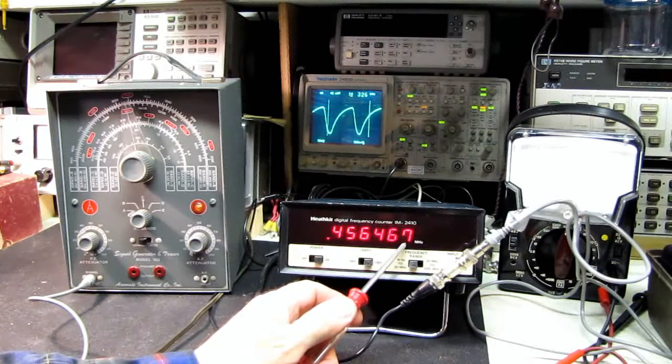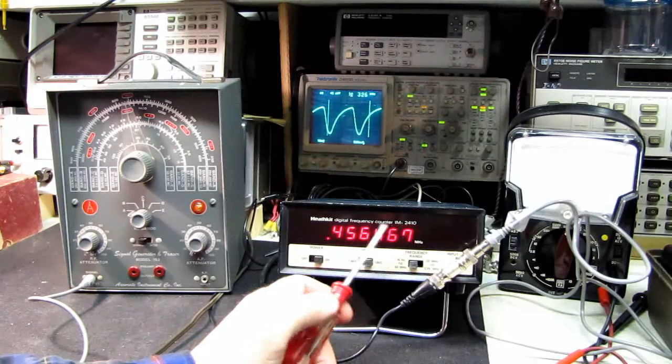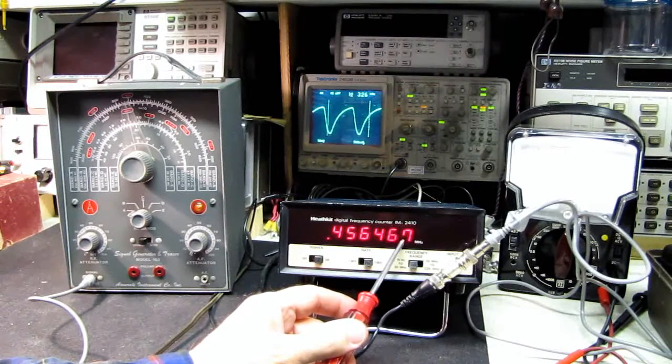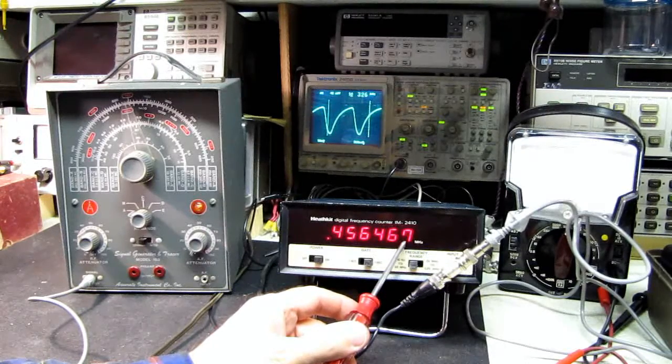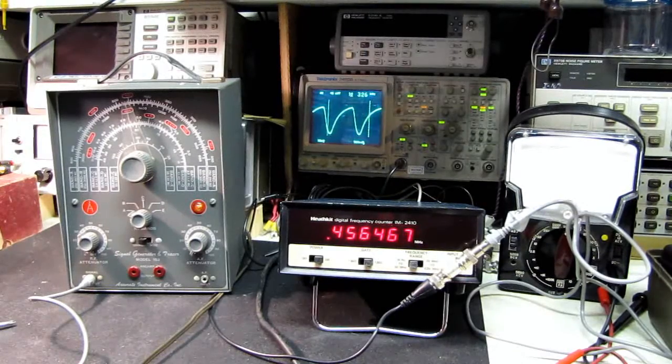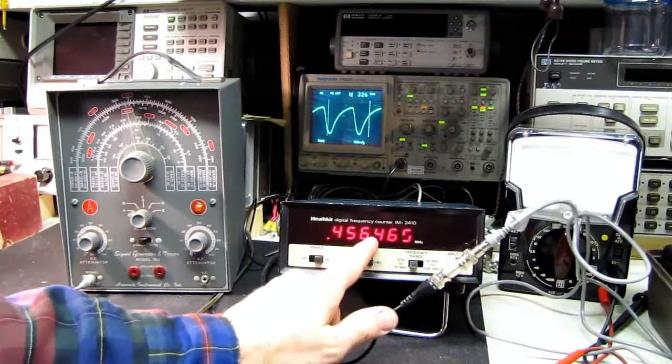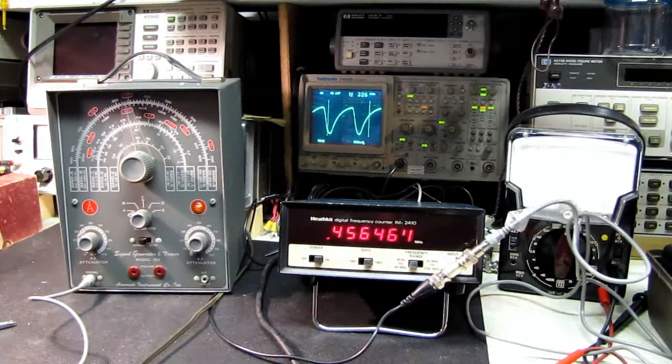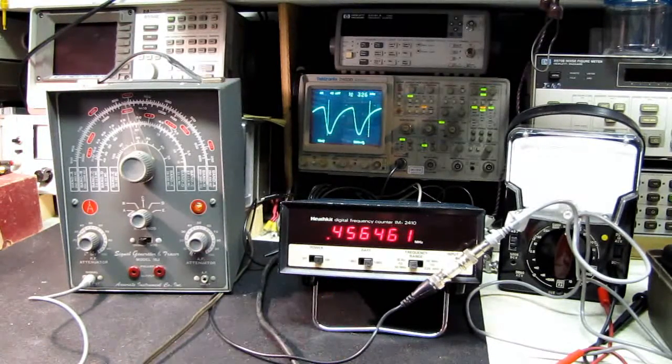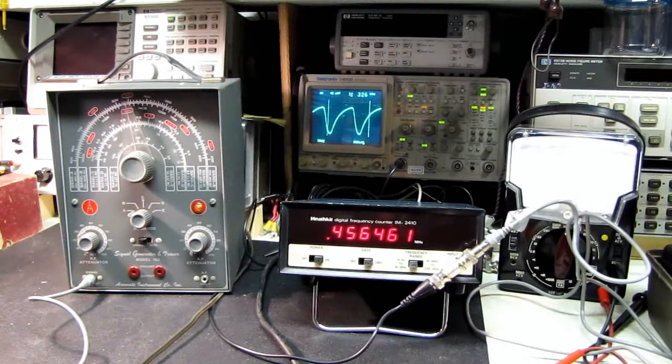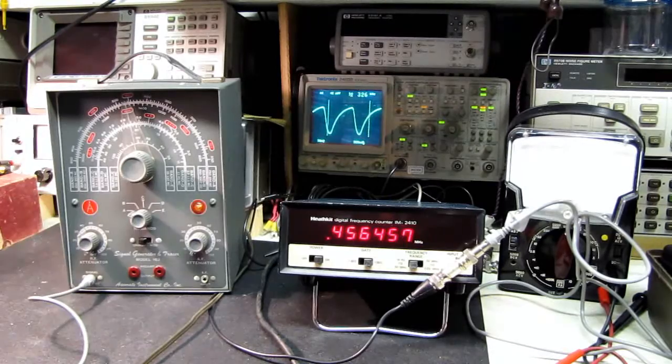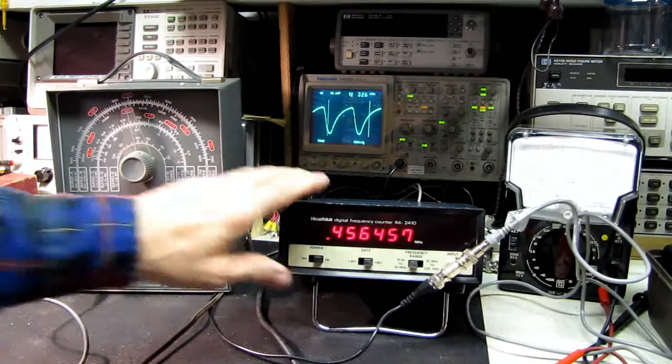Now the sharp-eyed among you might notice that the faulty digit is now down here at the end. It was one of the LED displays and the center segment is missing, so when you see this go from zero to that seven, that's actually a nine. I'm perfectly happy to have it in that condition.